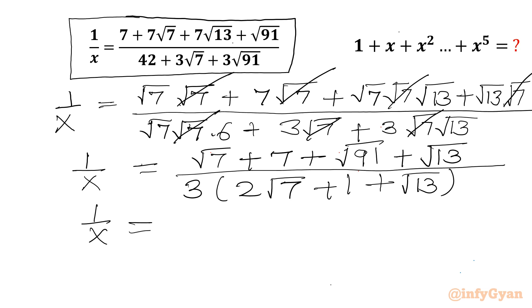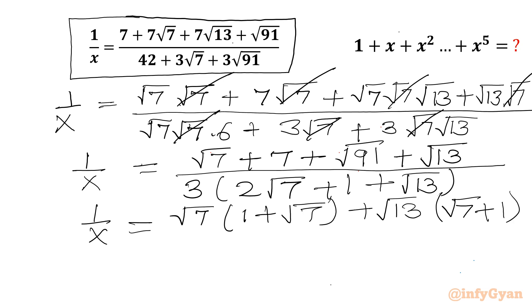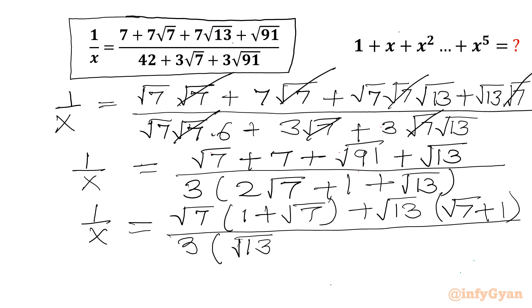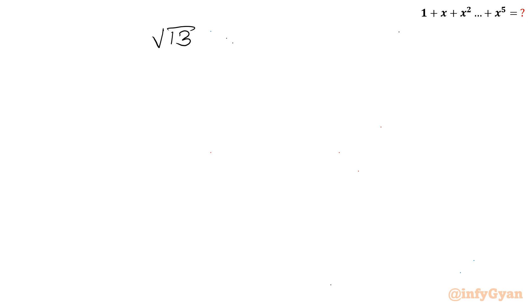Now I can write 1 over x — let us take root 7 common — so it will be 1 plus root 7. Here I can write root 7 plus 1; I will take root 7 common so I can write root 7 plus 1. Now the denominator I can write as 3 times in bracket root 13, the last term of the bracket, plus 2 root 7. I will split root 7 as root 7 plus root 7 plus 1. So root 7 plus 1 is common, and I can write root 13 plus root 7 times (root 7 plus 1) in the numerator.